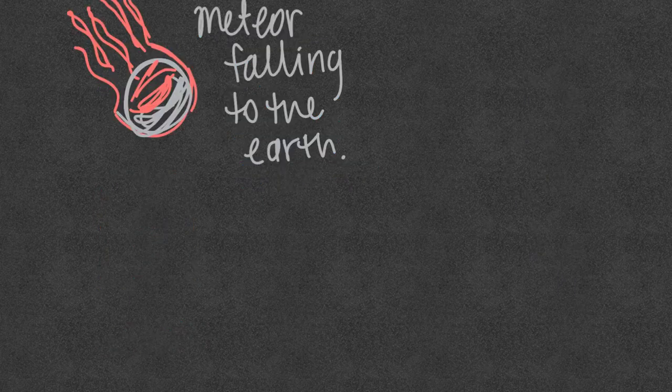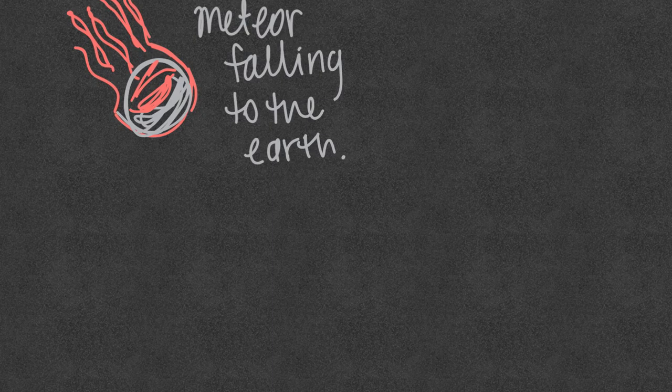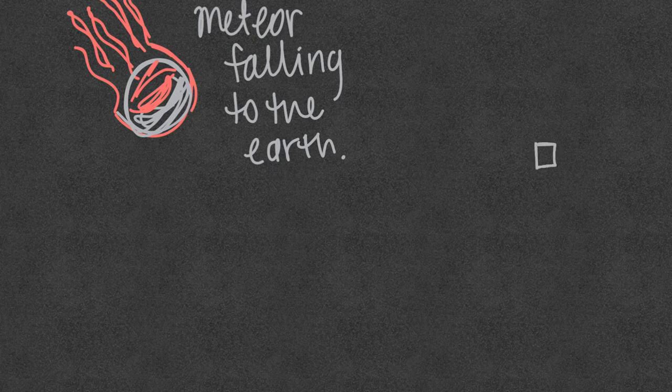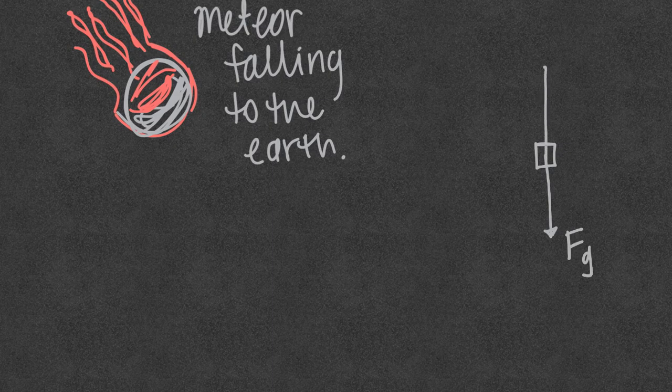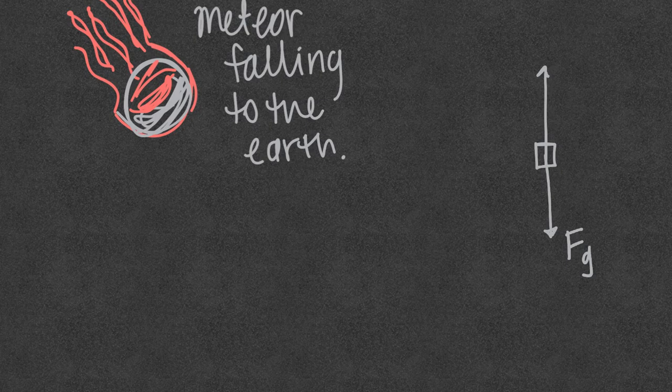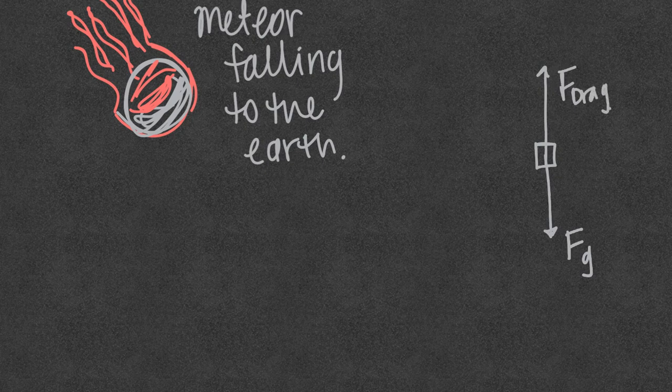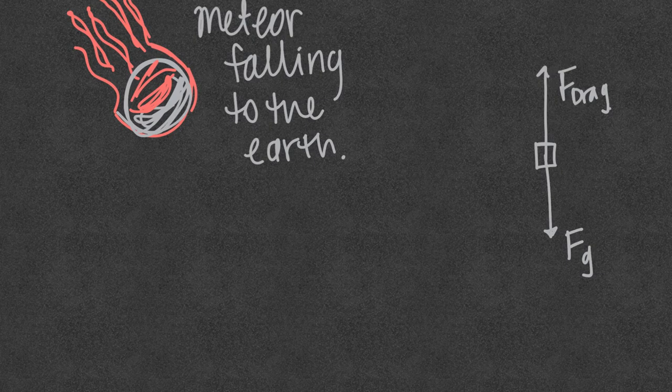When a meteor enters the earth's atmosphere it begins to burn up. So here is a meteor that's entering the earth's atmosphere and it's falling. So the forces acting on it would be the earth definitely pulling down on this meteor and the air which is causing it to burn up, all the friction in the air which we call the drag force, which is how we describe the air resistance or the friction due to air particles rubbing or bumping into the object.